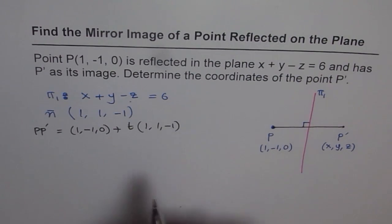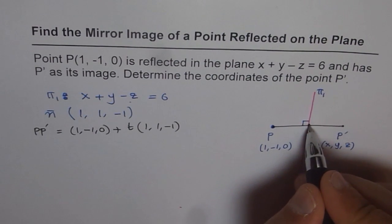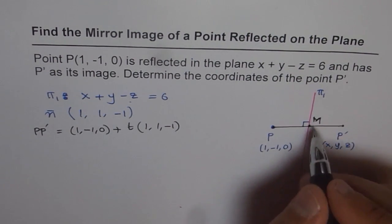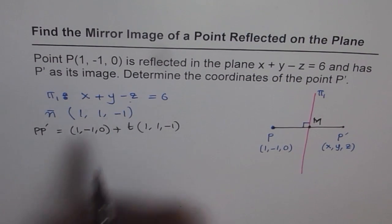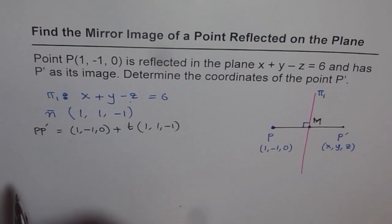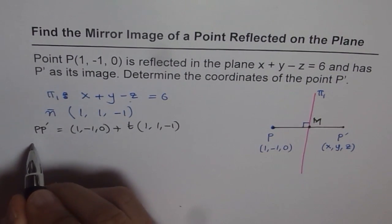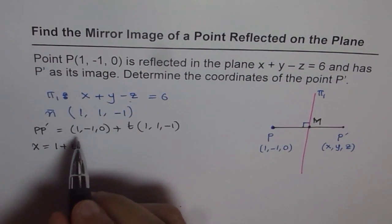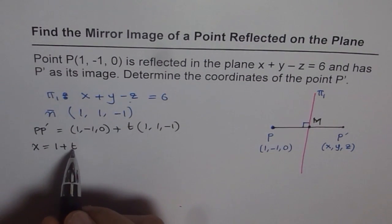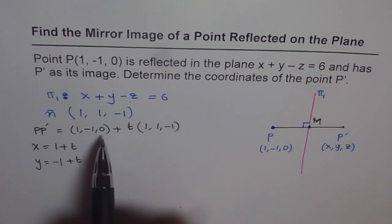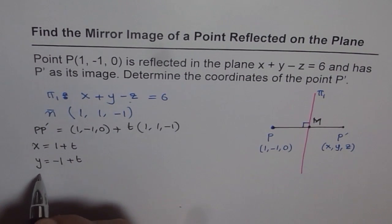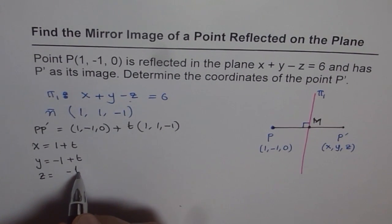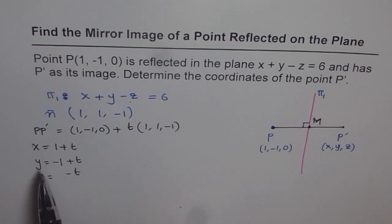Since this line is normal to the plane, it has to intersect the plane somewhere. Let that intersection point be M. To find it, we substitute the general point on the line into the plane equation. Converting to parametric form: x equals 1 plus t, y equals minus 1 plus t, and z equals 0 minus t, which gives minus t.